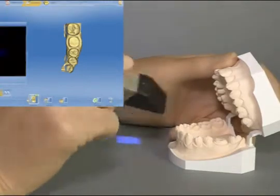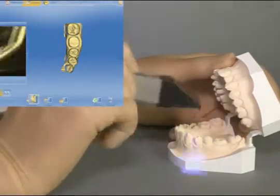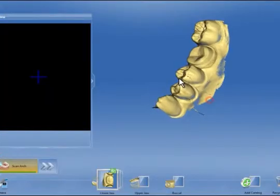We scan the proximal contacts of the neighboring teeth so that any undercuts are also shown. This facilitates a better design of the interproximal area. We now check the model.